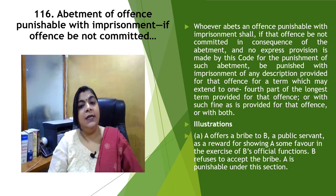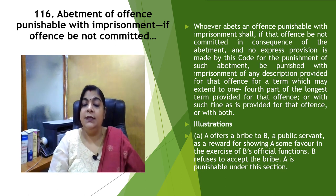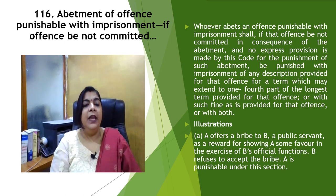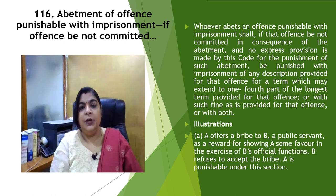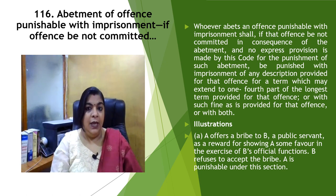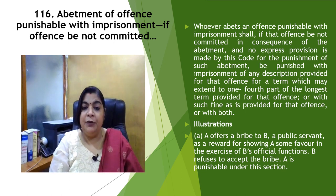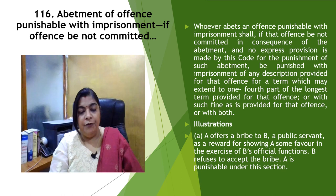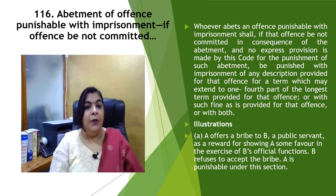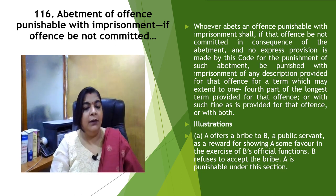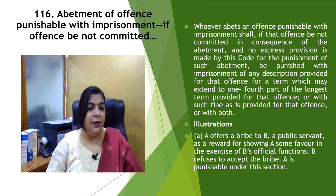The difference between Section 116 and the other sections we have already discussed is that Section 116 first part states that if any person is abetting another person to commit an offense and as a consequence that person is not committing any offense, and if no provision has been mentioned under IPC for that type of abetment, then whatever punishment has been prescribed for that offense, one fourth of the longest term will be given to the person who has abetted another person to commit an offense, even if the commission has not been done.